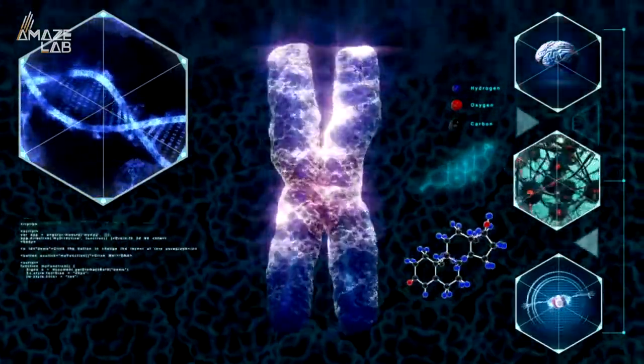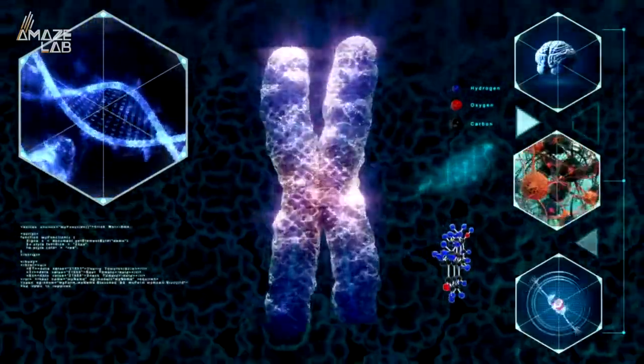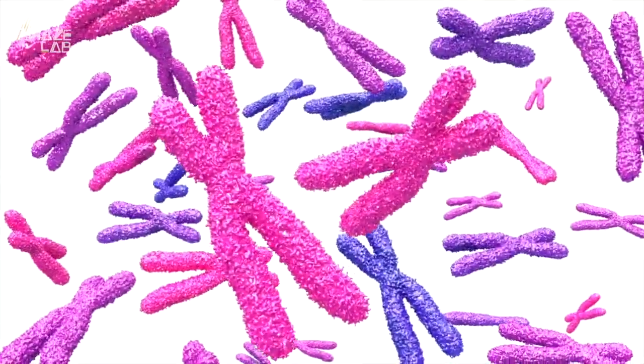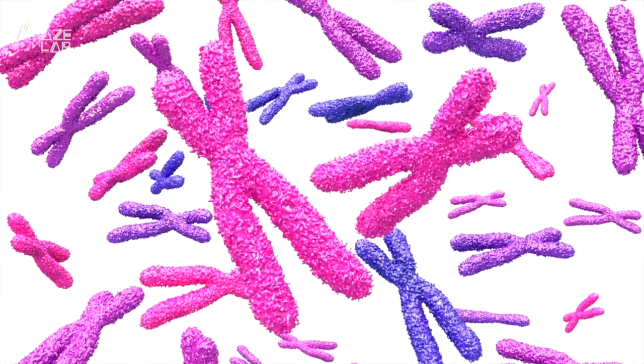Which is why scientists have now imaged the 3D organization of chromatin in human cells, revealing that the X-shaped visualization of a chromosome might be totally wrong.